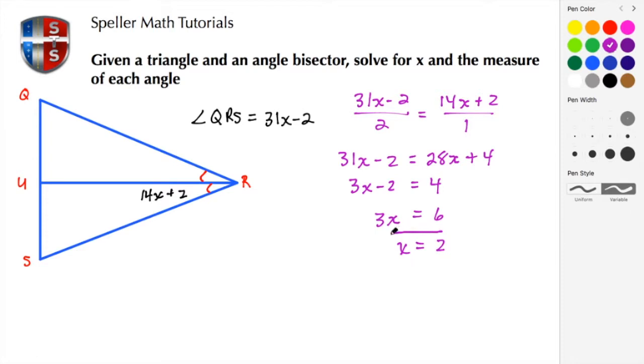So now that we have this value, let's substitute the value of x into each one of these expressions. These expressions should have the same measurement for the angle because of this angle bisector. So let's do the 14x plus 2 first. Here we have 14 times 2, because that's the value of x that we found, plus 2. Well, 14 times 2 is 28, then we write our plus 2, and 28 plus 2 is 30. So we're saying that the measure of those angles should both be 30 degrees.